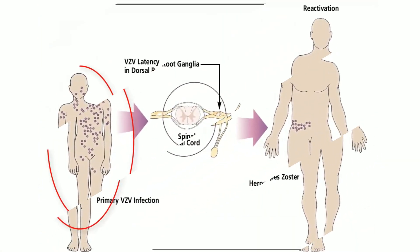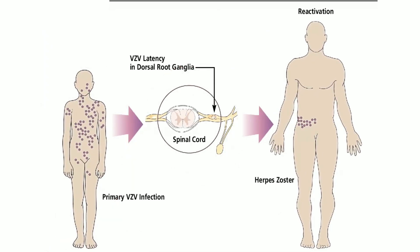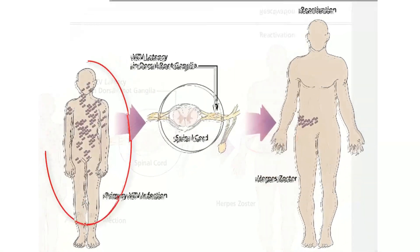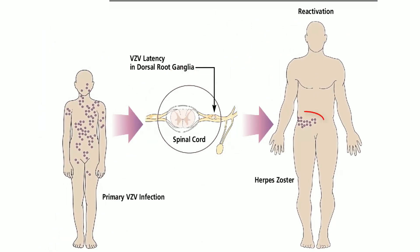Varicella or chickenpox is a primary herpes zoster virus infection. After the infection clears up, the virus stays dormant in the dorsal root ganglia, where it can later reactivate and spread via nerve pathways to the skin, where it results in the uncomfortable rash known as herpes zoster.